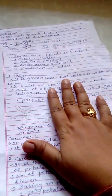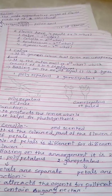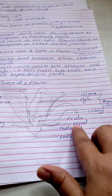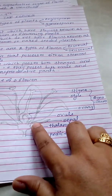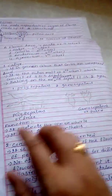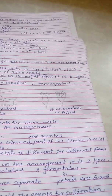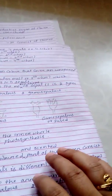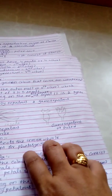Now we will read each whorl one by one. The first one is calyx. The calyx is green in color and covers an unopened bud. This part is your calyx or sepal — the calyx consists of sepals, which are green in color. When the flower is in bud condition, it covers and protects the inner whorls of the flower. This calyx consists of three to five sepals.